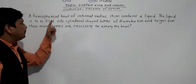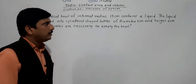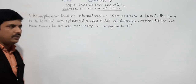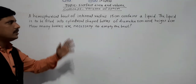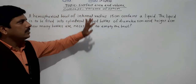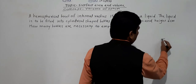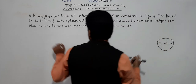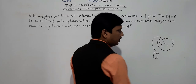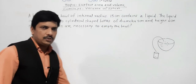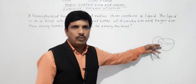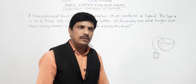Our third problem: a hemispherical bowl of internal radius 15 cm contains a liquid. The liquid is to be filled into cylindrical-shaped bottles of diameter 5 cm and height 6 cm. How many bottles are necessary to empty the bowl? We need to find the volume of the hemispherical bowl, then the volume of one cylindrical bottle, and divide them to get the number of bottles.